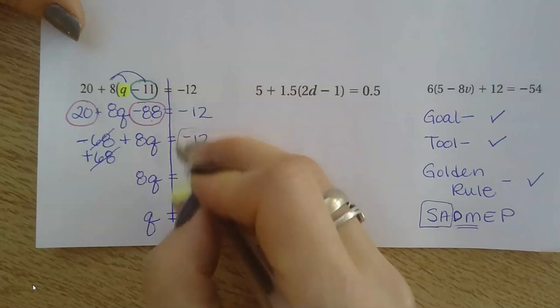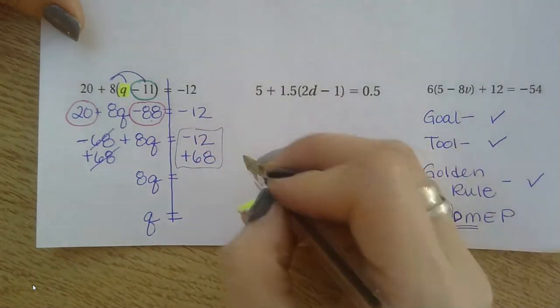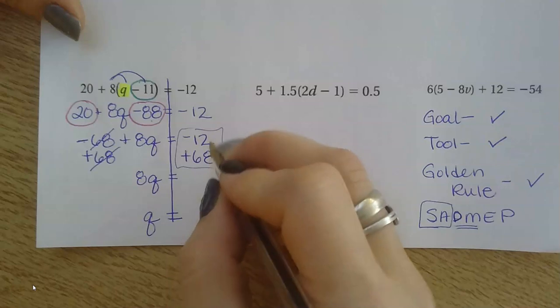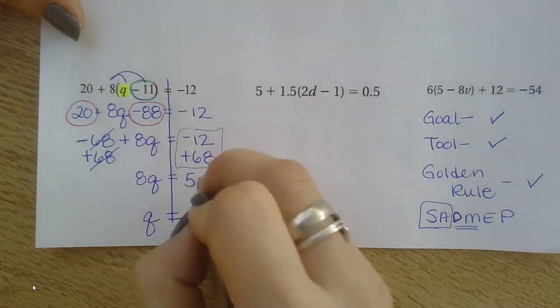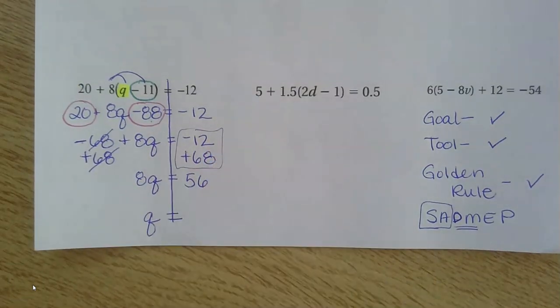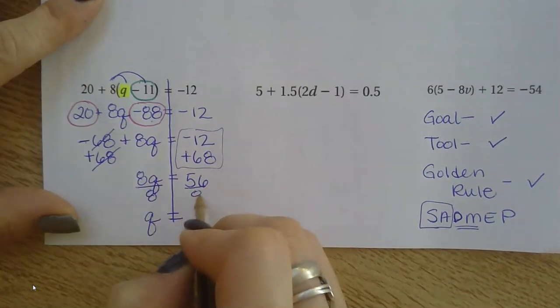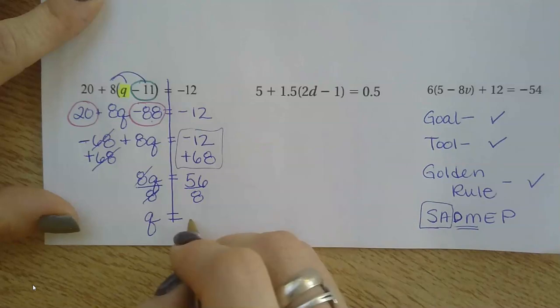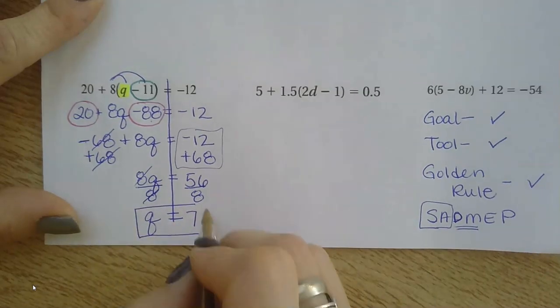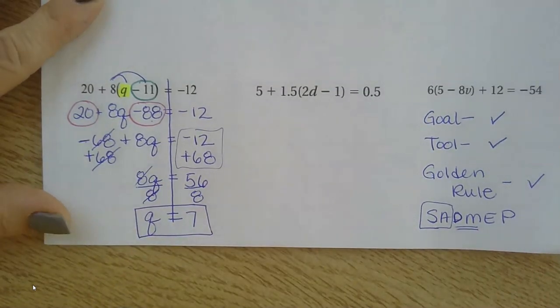And again, different signs subtract. Go over here and do it if you need to, but 68 and negative 12 should give me 56. And my last step would be to divide by 8 on both sides. And Q is equal to 7.